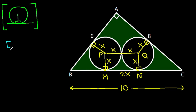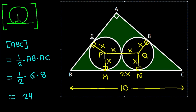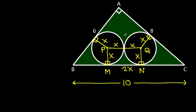Area of ABC will be one-half times AB times AC, that will be 24. Now, if we join AP, AQ, BP, and CQ.